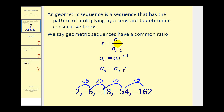We can also calculate the common ratio by taking any term in the sequence and dividing by the term before it. The way we express that is a sub n divided by a sub n minus one. So if we use a sub two, we divide by a sub one: negative six divided by negative two is equal to positive three. Likewise, negative fifty-four divided by negative eighteen is still equal to positive three.